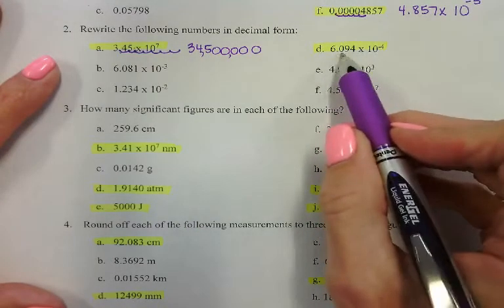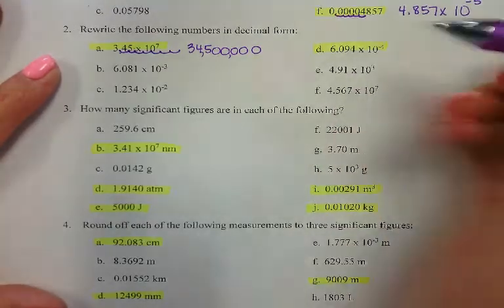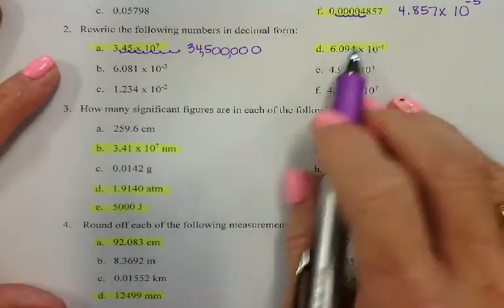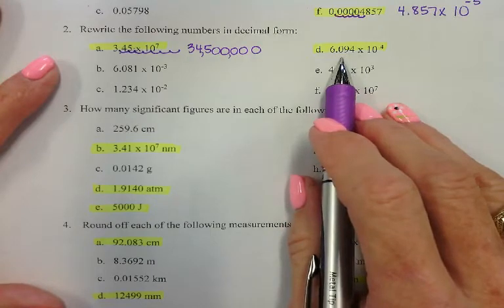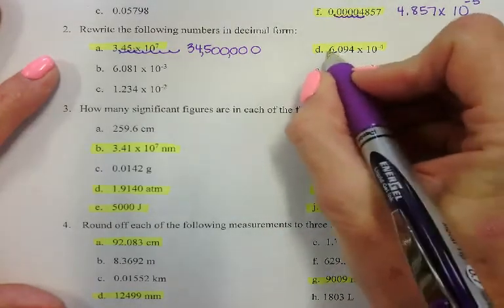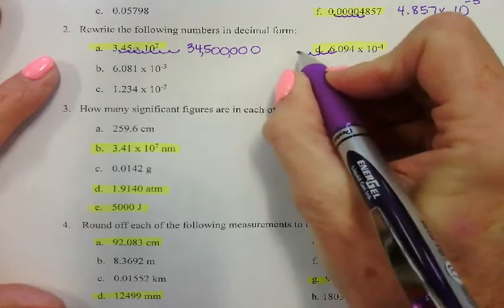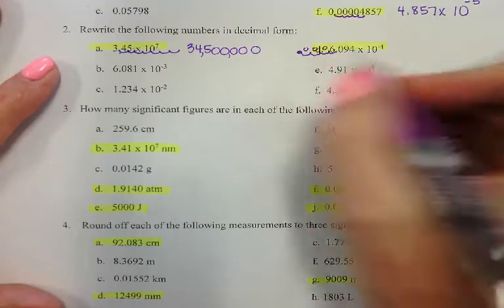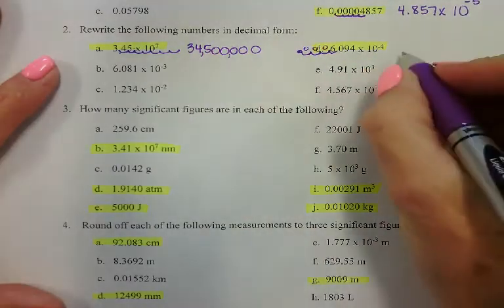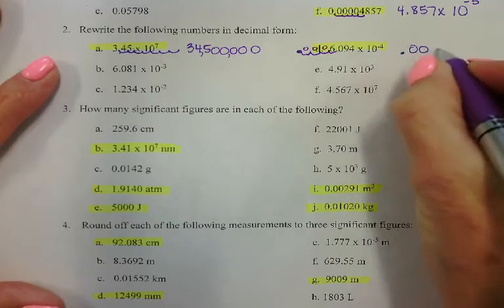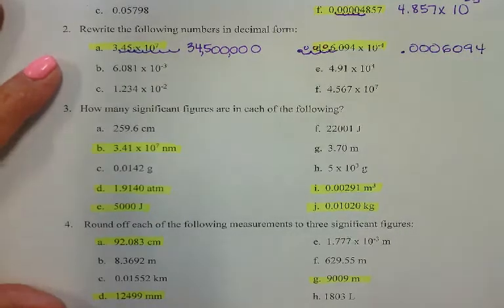Letter D: 6.094 times 10 to the minus fourth. It's a negative exponent, so my decimal point is going to go to the left, because this number has to be less than 1. I'm going to move it 1, 2, 3, 4 places, putting zeros in those places. So the answer is 0.0006094.